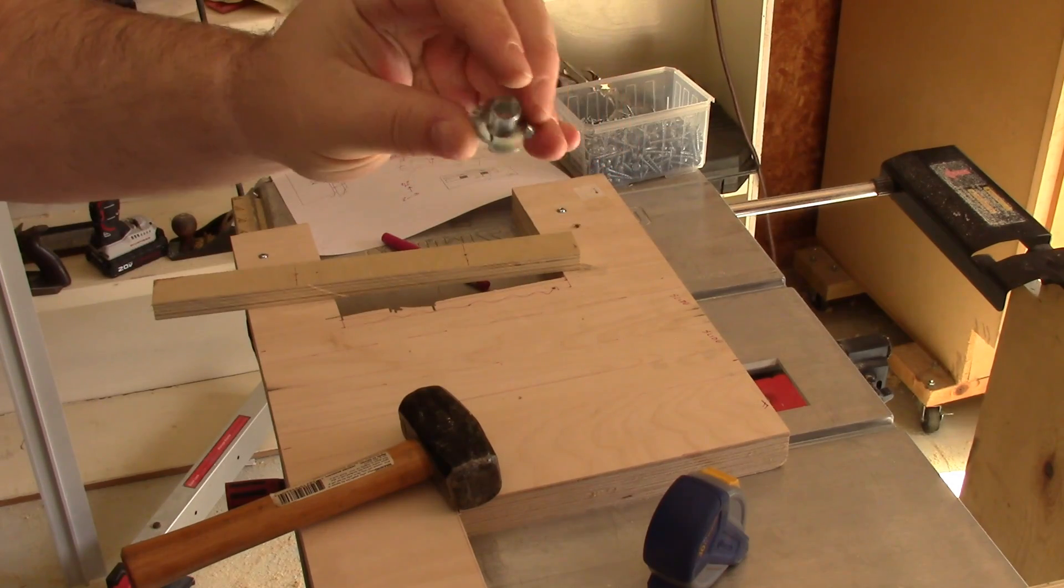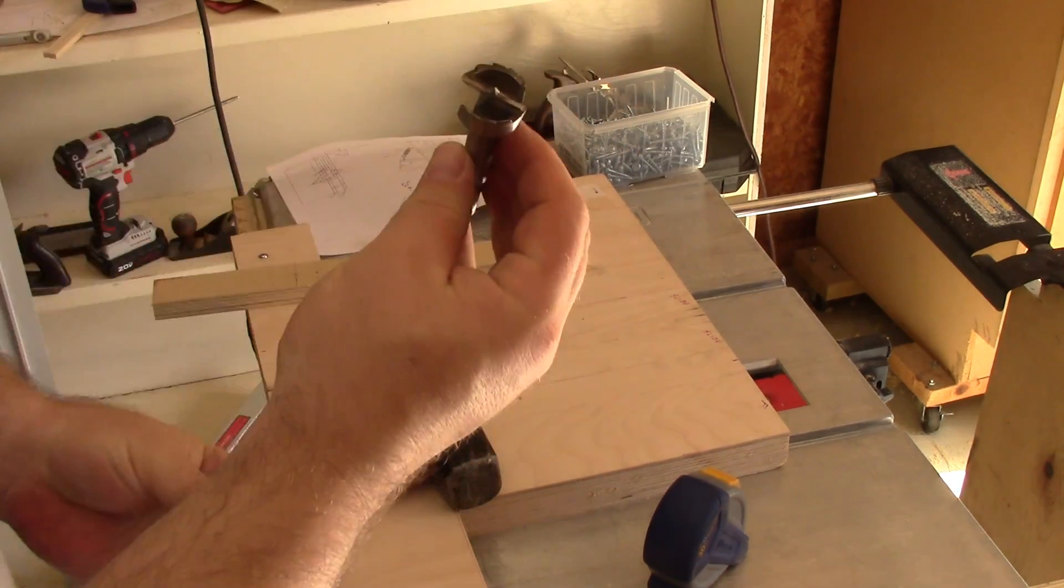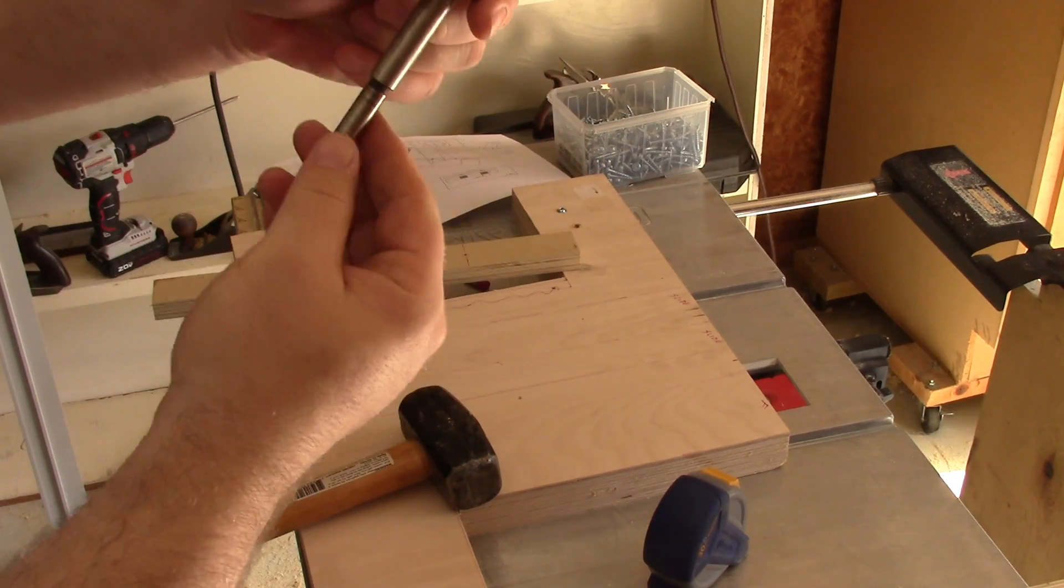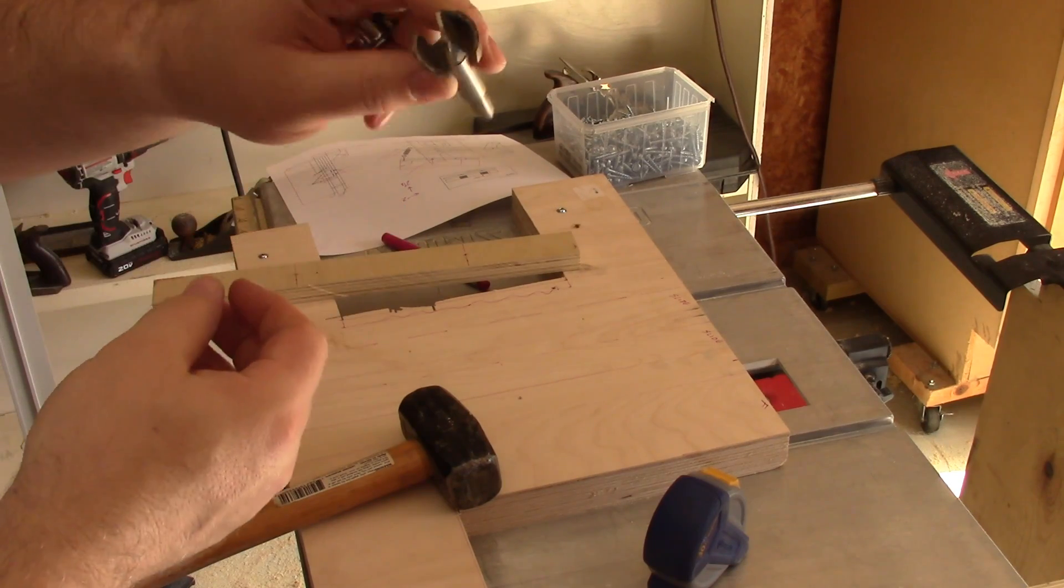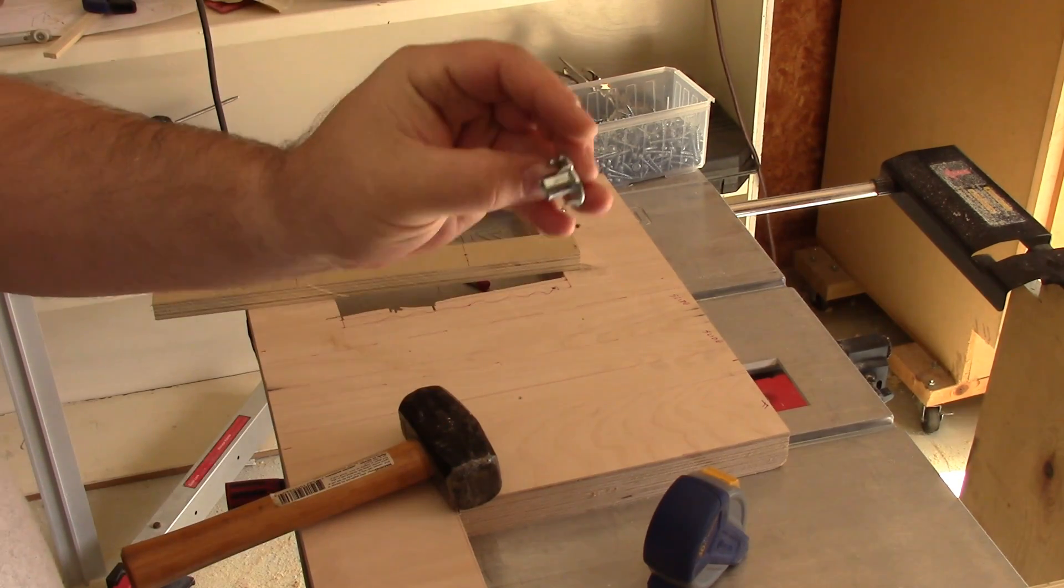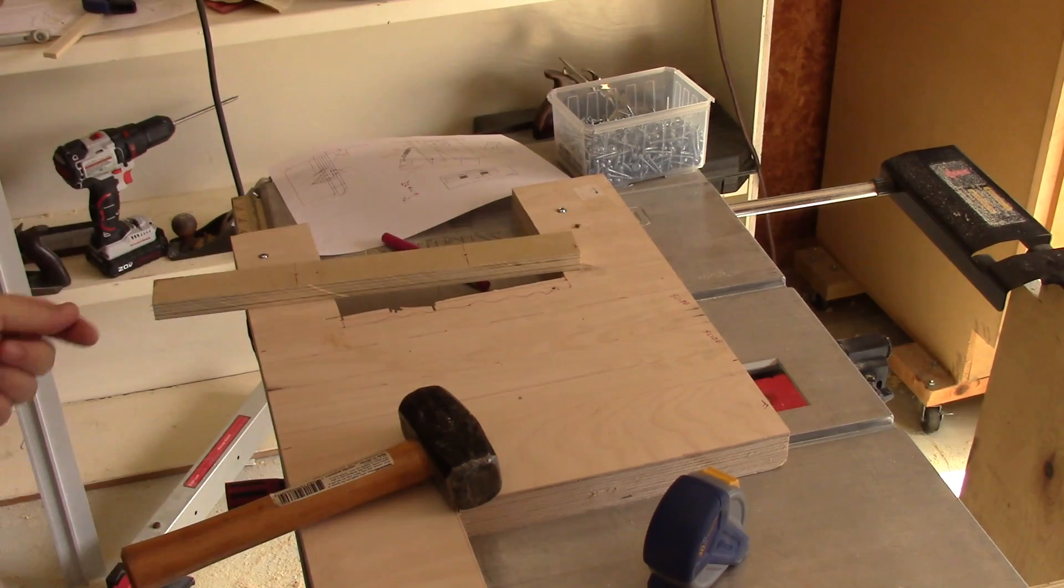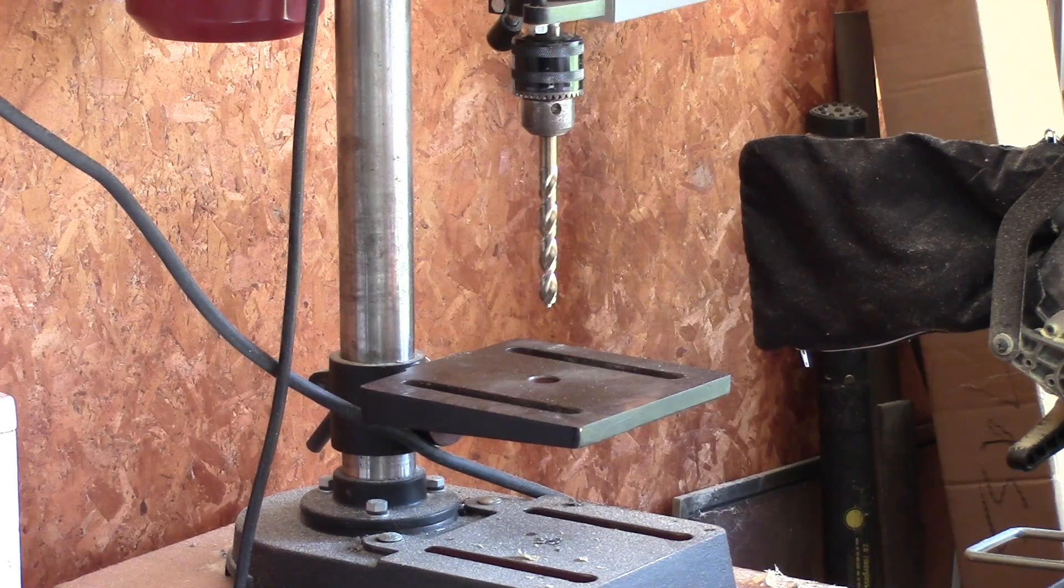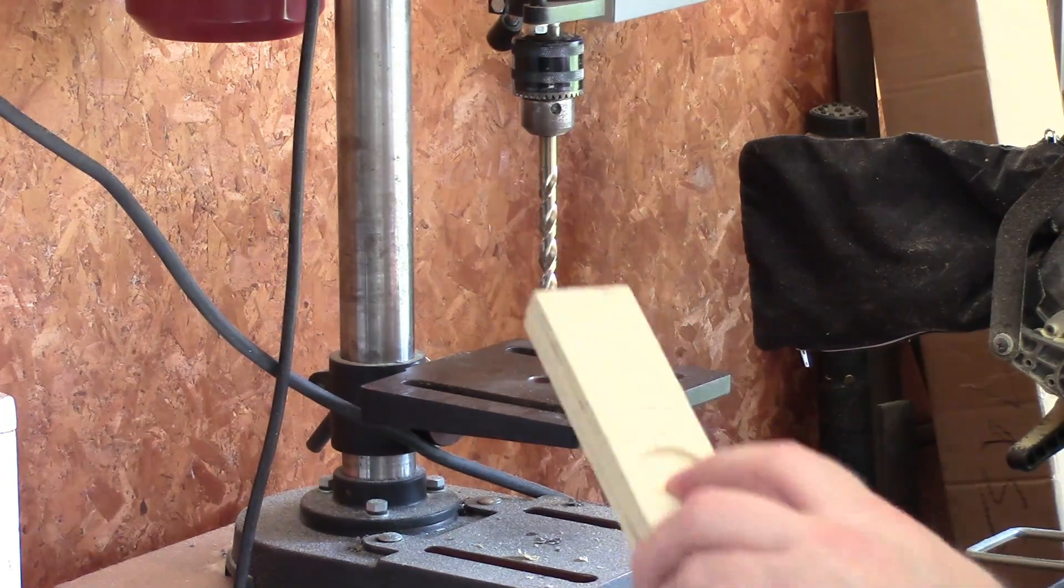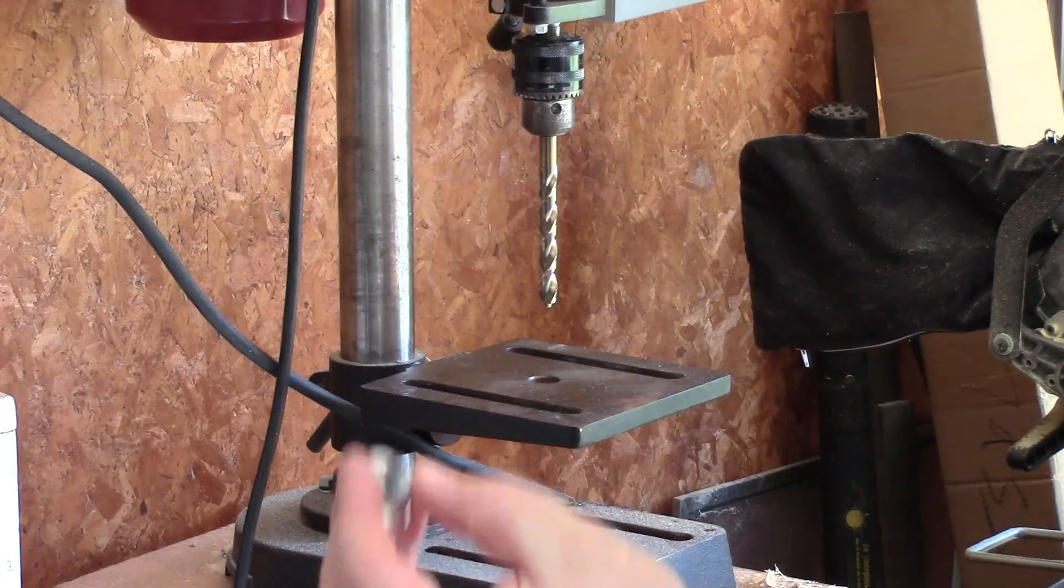Alright, I'm going to be using these pronged T-nut inserts. So I'm going to drill it out with this Forstner bit. It's one and one-sixteenth inches. You'll have to adjust it for whatever your pronged T-nut is. Now we're going to drill this out seven-sixteenths of an inch to fit the outer diameter of the T-nut here.